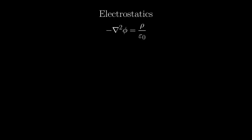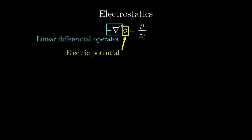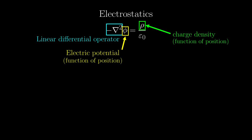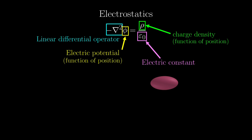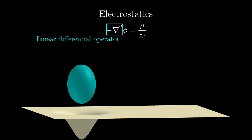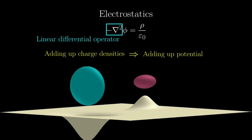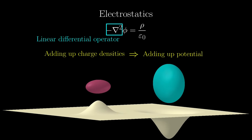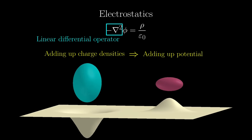Let's take a closer look at the electrostatics equation. You don't need to know what the inverted triangle thing is, just that it is a linear differential operator. Phi is the electric potential, a function of position. Rho is the charge density distribution, which depends on position. Epsilon-0 is simply a constant. If you have a charged object with some charge density distribution rho, it generates an electric potential. If two objects are brought together, you simply add up the potential generated by each object. The fact that we simply add up the potentials when combining two charge densities defines linearity. Green's functions exploit linearity to the fullest.